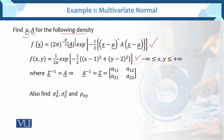In the density function, sigma inverse appears here — this is sigma inverse, and sigma inverse is equal to A. Then A inverse is equal to sigma, and sigma equals the matrix with elements A11, A12, A21, A22.